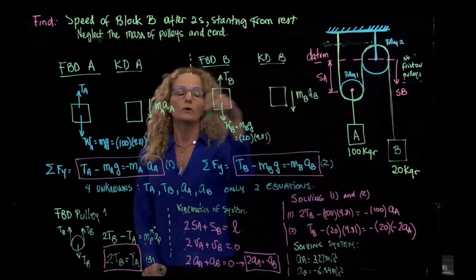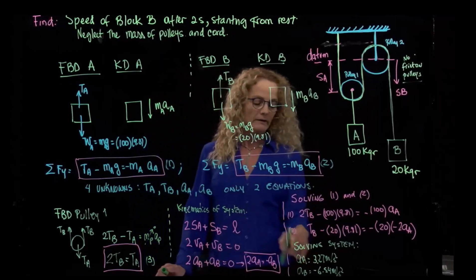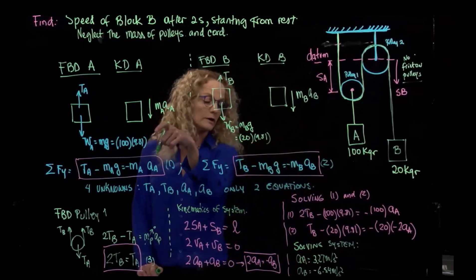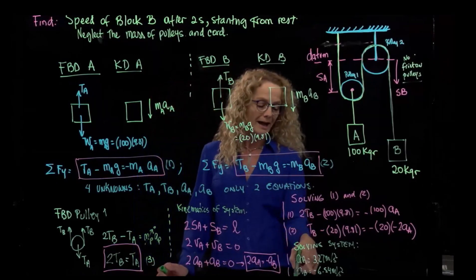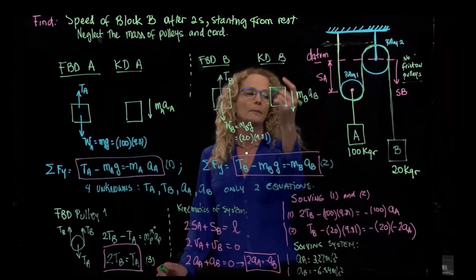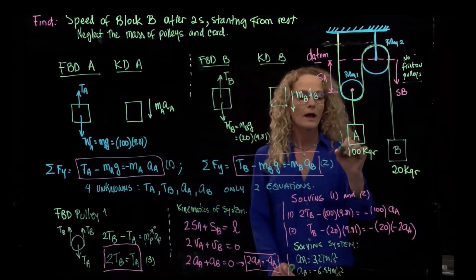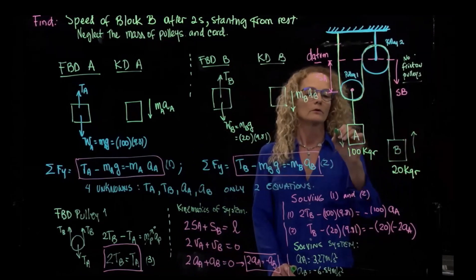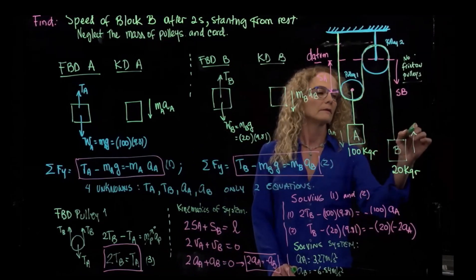So what does that mean? That I assumed both going down, and what I got is that acceleration is going down because I got a positive number, and the acceleration of B that I got a negative number, it means actually that it's going up. So whenever this goes down, this goes up. So this is acceleration of A, and this is acceleration of B.